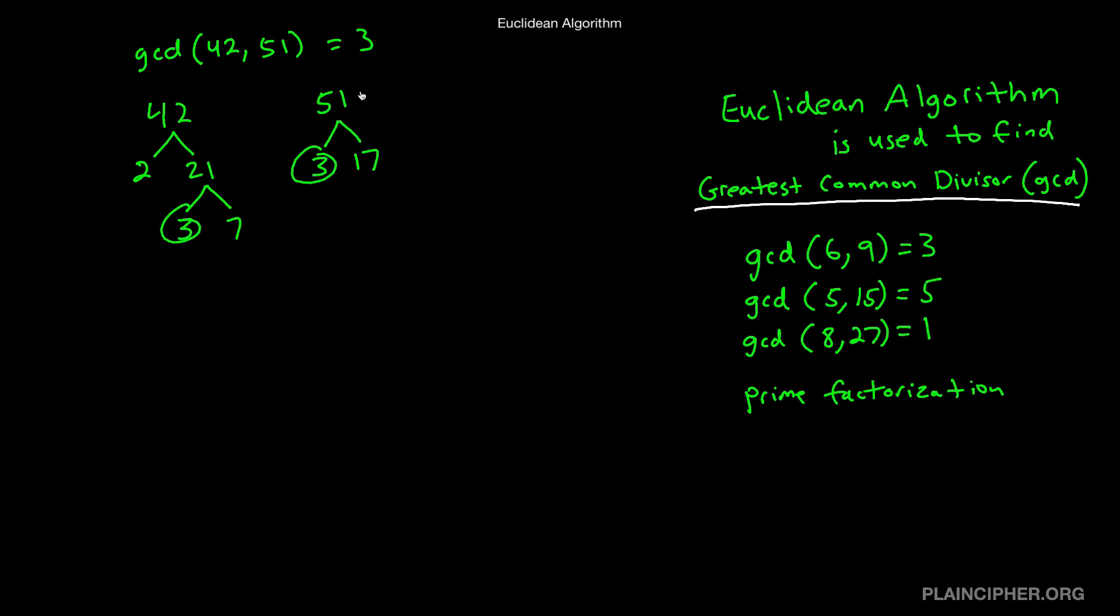But I'm here to tell you that this is a very slow and tedious way to do it. Prime factorization is very slow and tedious. So that's where the Euclidean algorithm comes in. And let me show you how it works.